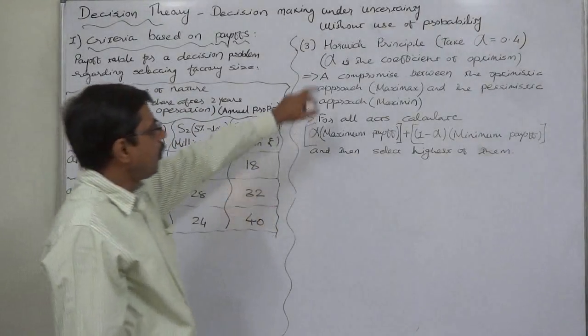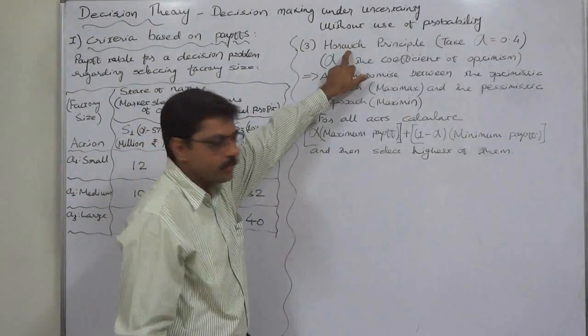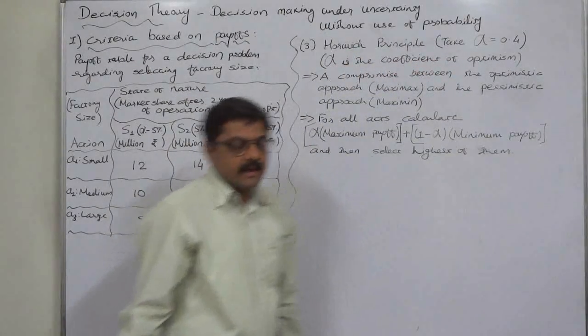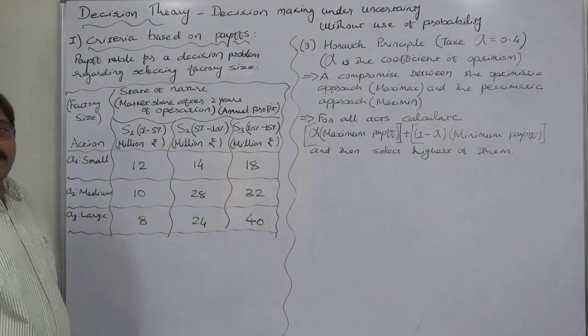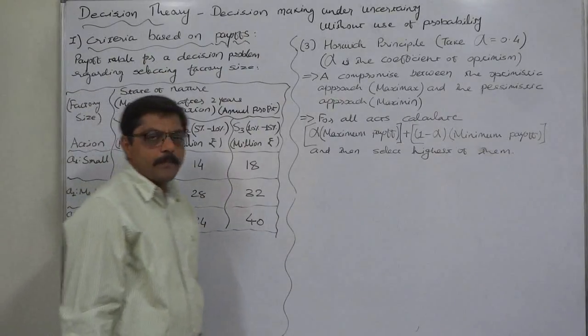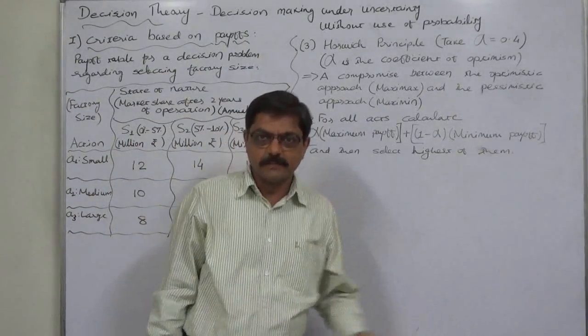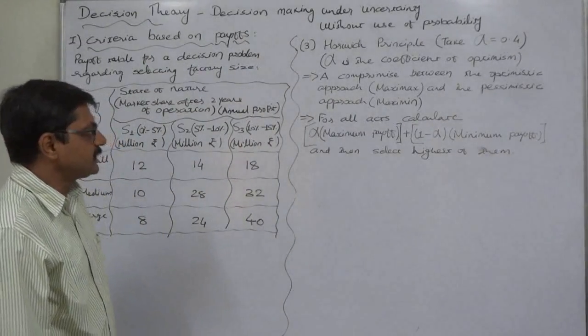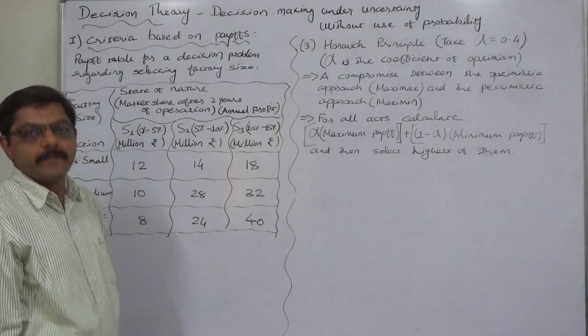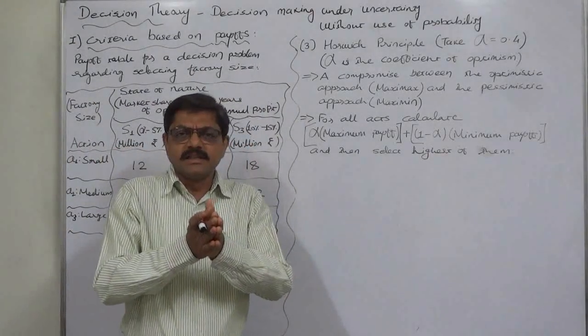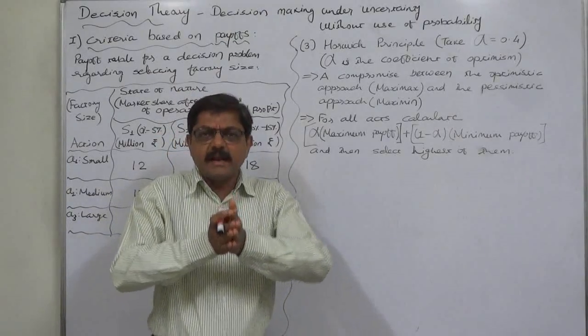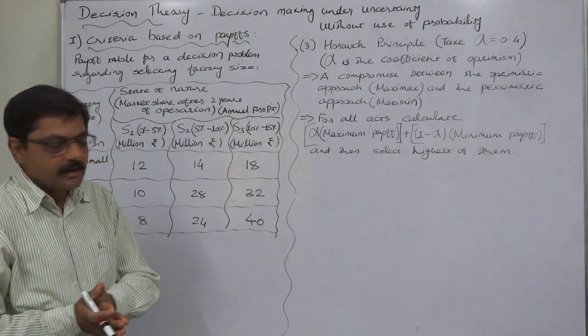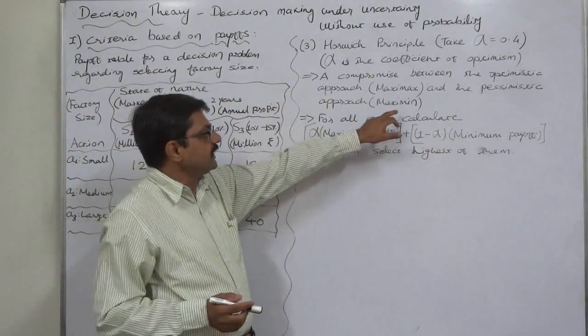The Hurwicz principle is actually a compromise between the optimistic approach, the maximax principle, and the pessimistic approach, the maximin principle. It is suggested to take a balance between them.